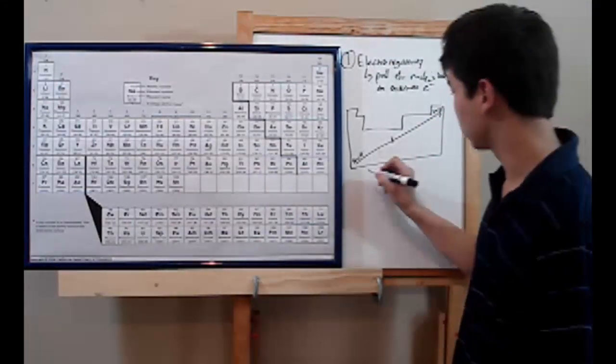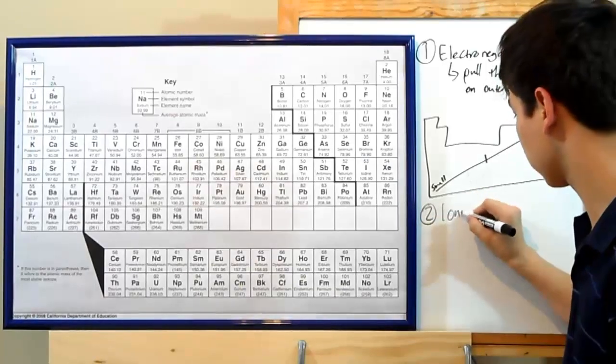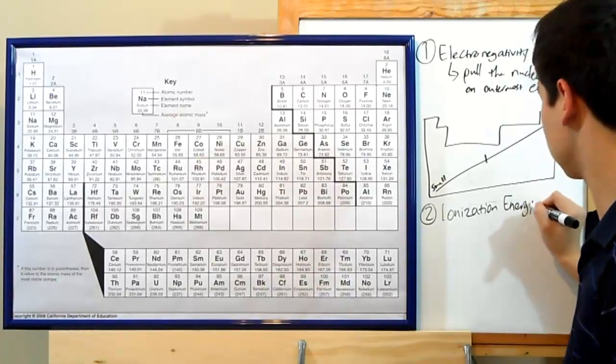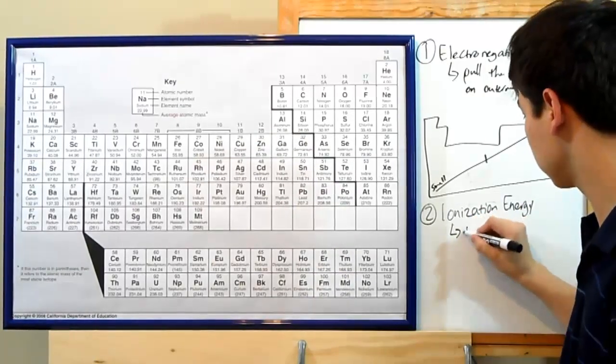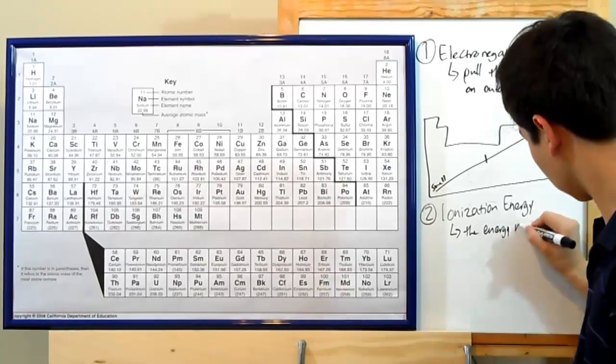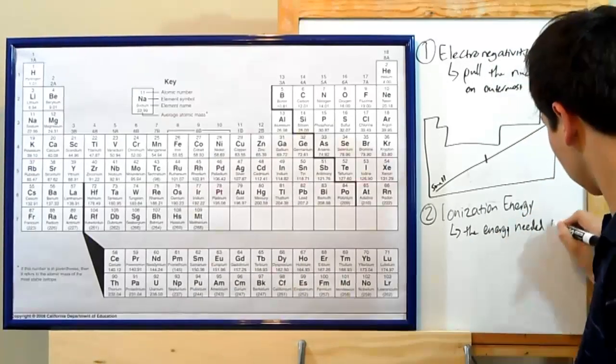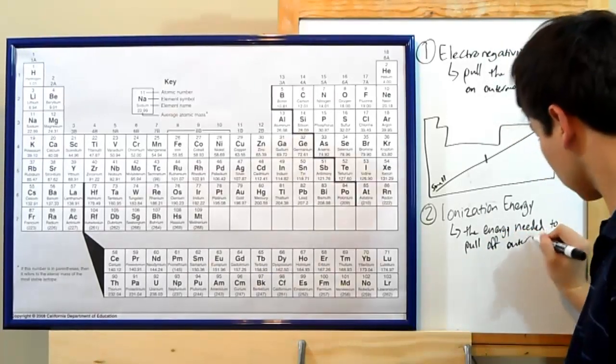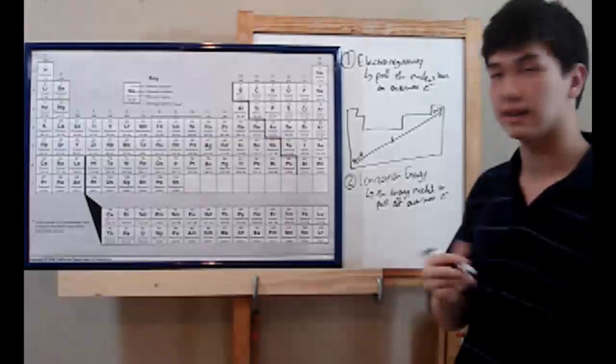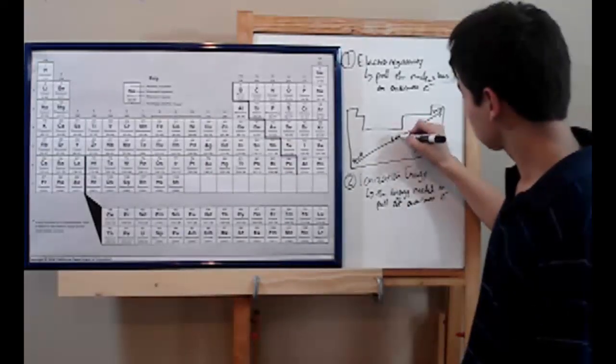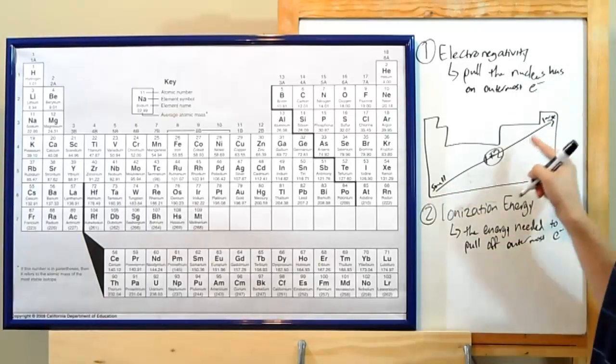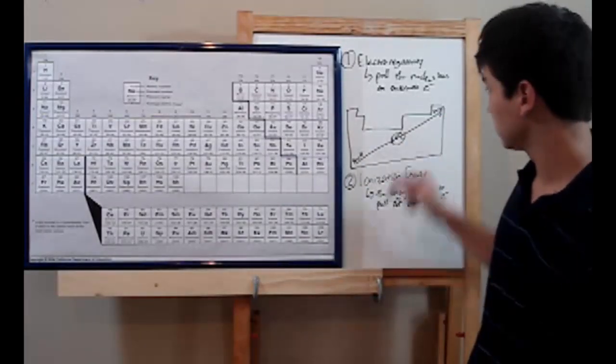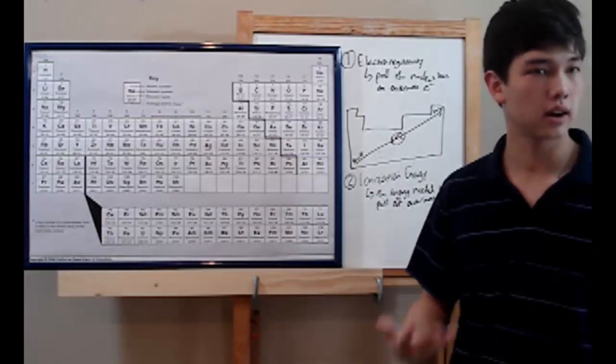The second one you'll need to remember is ionization energy. This is very relevant to forming ions. What it is, is the energy needed to pull off the outermost electron. It follows the same pattern as electronegativity. Smallest over here, highest over here. That's because electronegativity is very relevant to it. The stronger the pull the nucleus has on the electron, the harder it's going to get off.